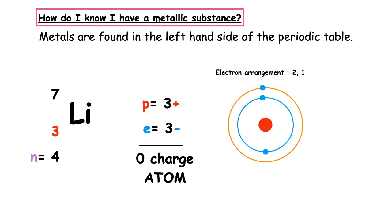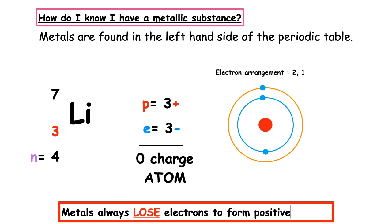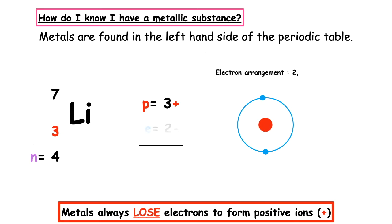We know that all elements want to achieve stability by having a full stable outer electron shell. Metals will always lose outer electrons to form positive ions. It wants to have the electron arrangement 2. As a result the number of electrons change. We now have two electrons. Three positive plus two negative gives our overall charge of positive. This means that metal atoms prefer to sit as metal ions.